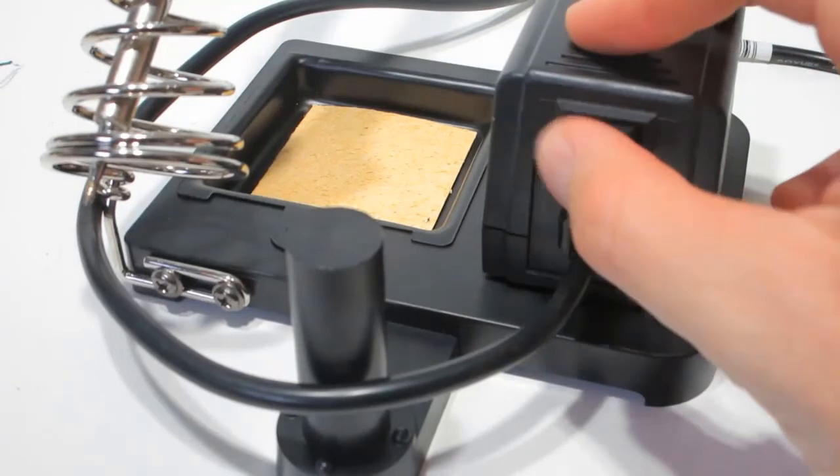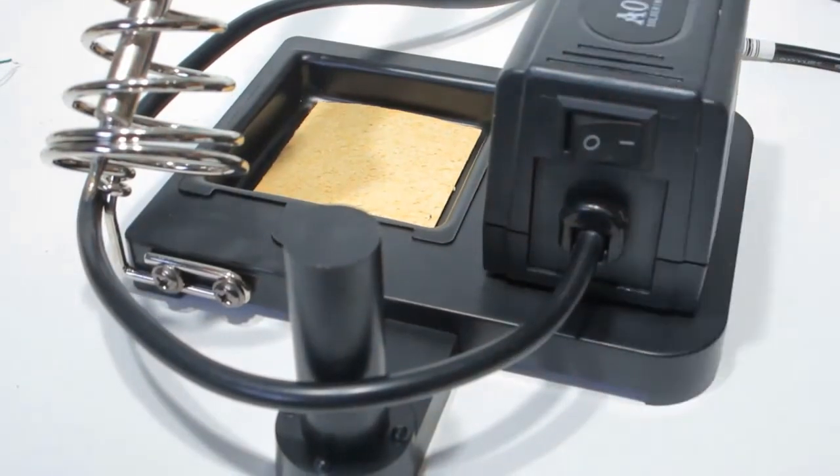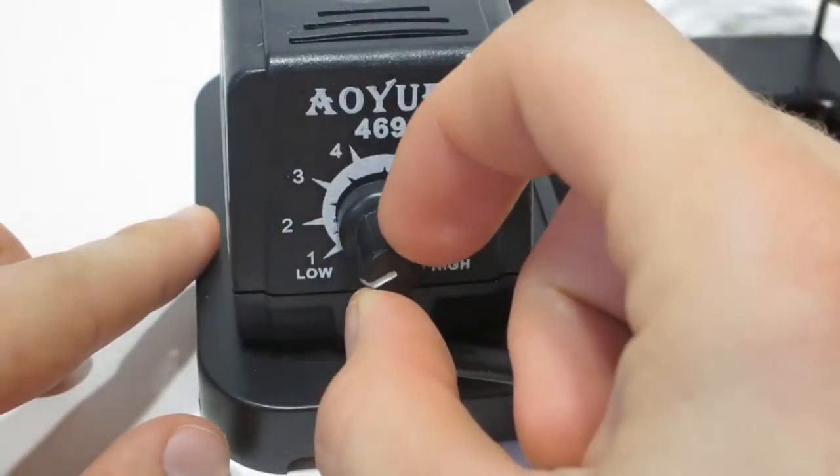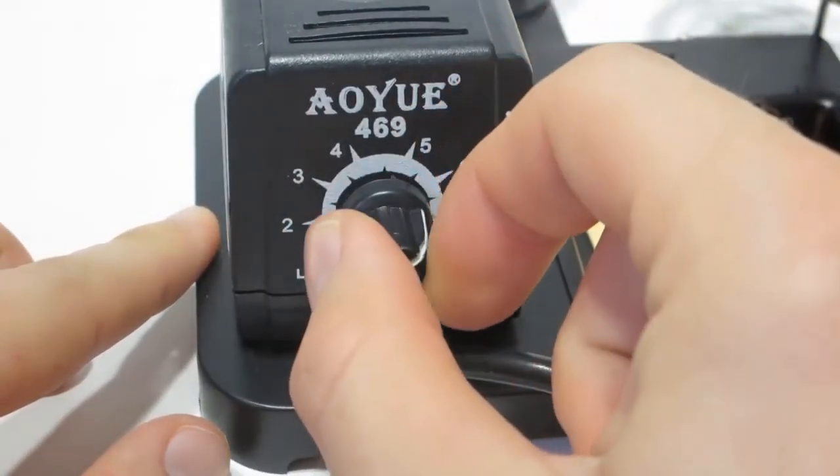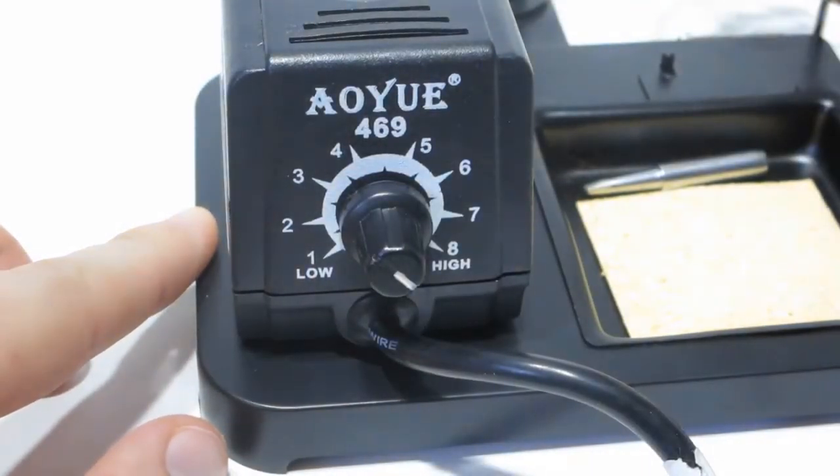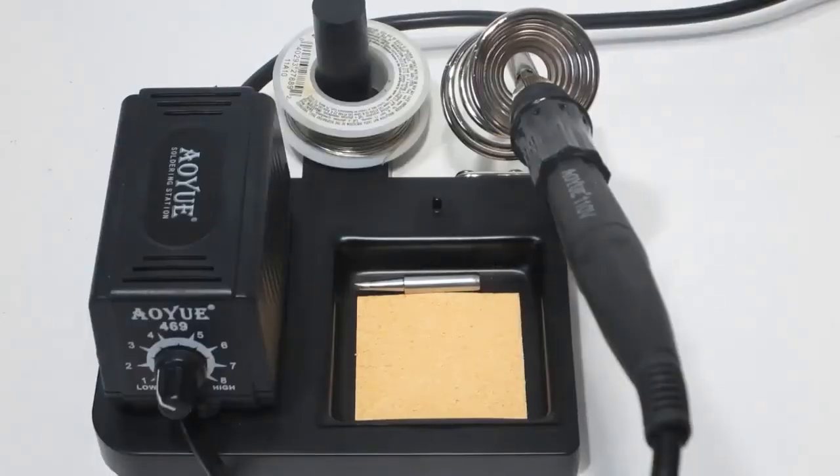The adjustable high performance mini soldering station AOYUE 469 is easy to transport and saves space on the work area due to its light and intelligent design. Equipped with a quickly heating PTC ceramic heater, the station is ideal not only for hobby but also for professional soldering. The soldering tips are removable from the heater so that they can be effortlessly swapped if needed, which results in a great deal of cost efficiency. You do not have to swap the whole unit, only the tips.